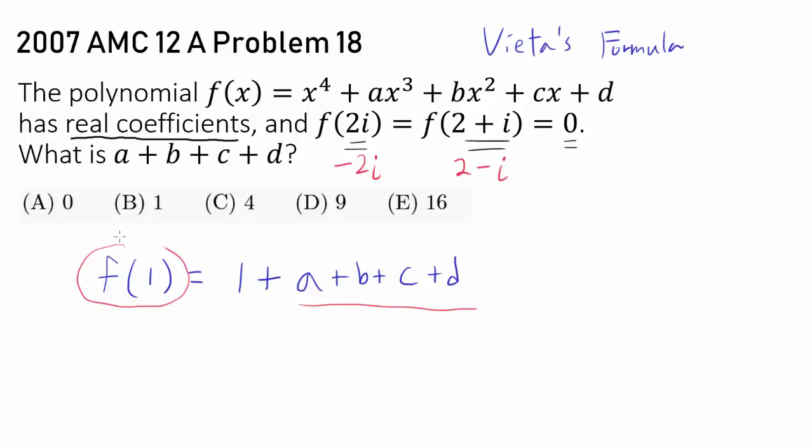So once we know the value of f(1), we should be done. But how do you find f(1)? Well, we know all of these zeros, so we know one way that f(x) can be written.